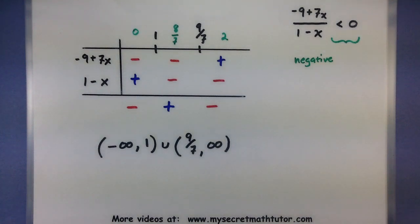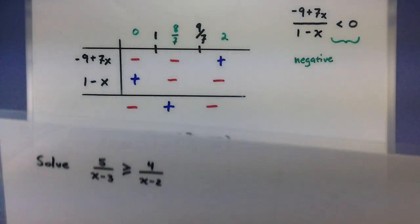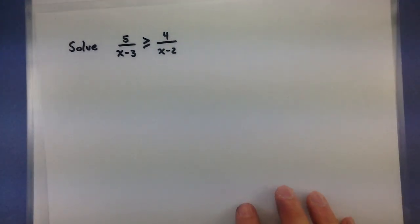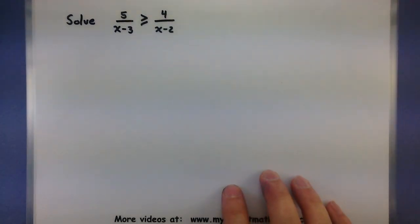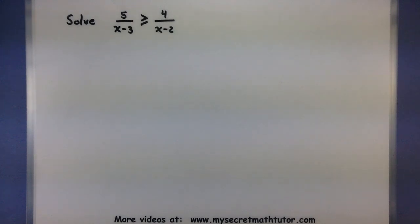There is a lot of work in here, but it is manageable with the table as long as you're keeping track of all the signs. Let's do one more example to make sure you have this process down — and this one will be a little bit bigger. We want to solve 5 divided by (x minus 3) is greater than or equal to 4 over (x minus 2).